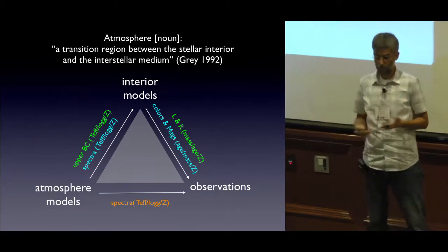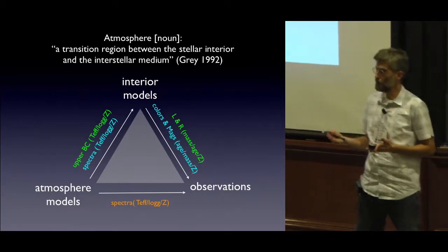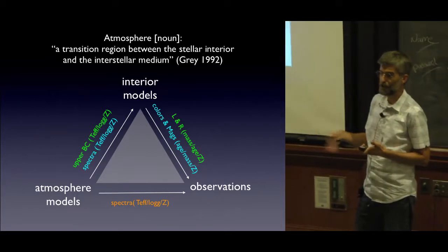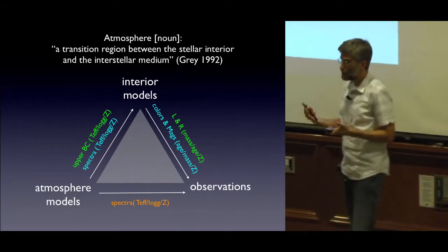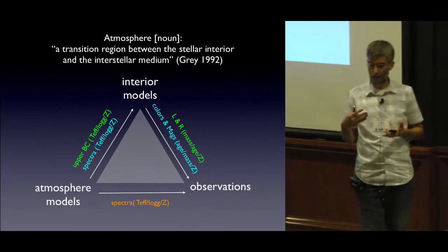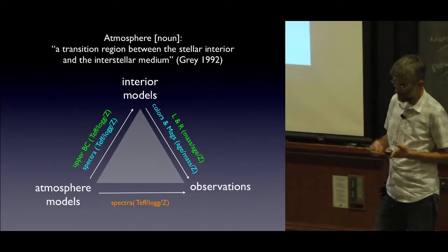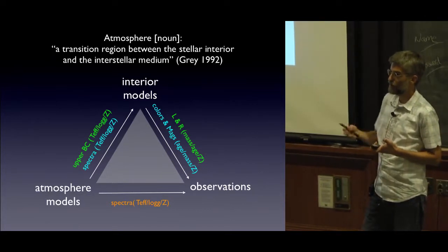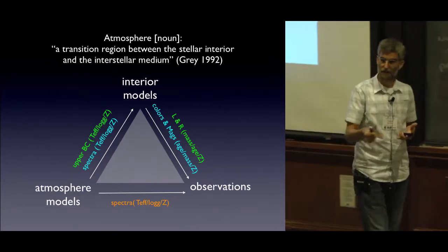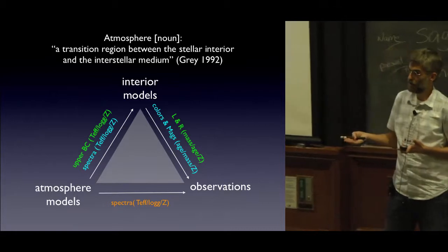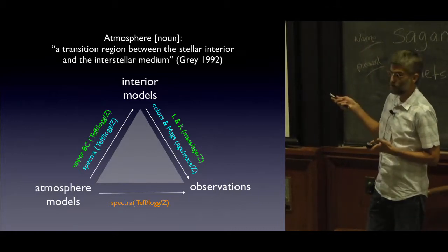You also get a run of temperature versus pressure. At the bottom of that, say deep down at 100 bars of pressure, you can get a temperature and pressure for a given effective temperature and surface gravity, which is the defining pair of quantities for the object. And that's used as an upper boundary condition for these interior models.